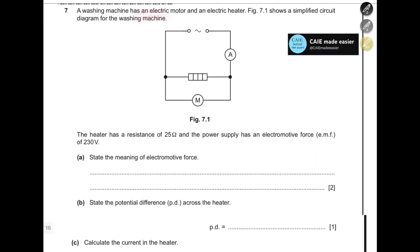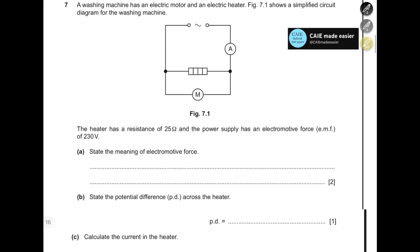Question number one: a washing machine has an electric motor and an electric heater, as shown in figure 7.1 — a simplified circuit diagram of the washing machine. The heater has a resistance of 25 ohms and the power supply has an EMF, or electromotive force, of 230 volts. State what is meant by electromotive force. Electromotive force, or EMF, is the work done in moving unit charge around a complete circuit.